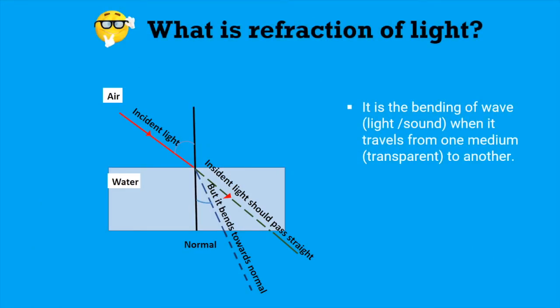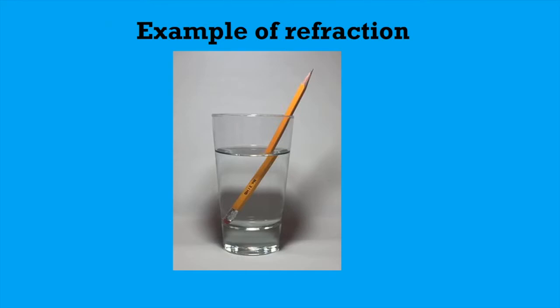What is refraction of light? It is the bending of wave when it travels from one medium to another medium. When light travels from air to water medium, we expect that it should pass straight, but instead of that it bends towards normal. This process of bending is called refraction. We can see this refraction by keeping pencil in glass of water. Pencil appears to be bent at various angles when light passes through air into the water.